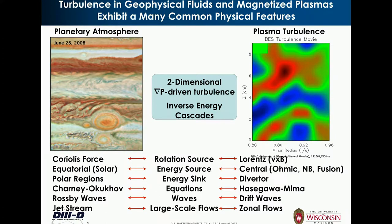Some of the commonalities between plasma turbulence and planetary or fluid turbulence, such as atmospheres: you have a very similar phenomenon of rotation sources, whether it's Coriolis or the Lorentz force in a magnetized plasma. You have energy sources in the middle of the plasma or at the equator. There are common physical equations — Hasegawa-Mima in plasmas versus Charney-Obukhov in planetary plasmas. Rossby waves are very analogous to drift waves in plasma. And of course you have large-scale flows — zonal flows in plasmas or jet streams in planetary atmospheres.